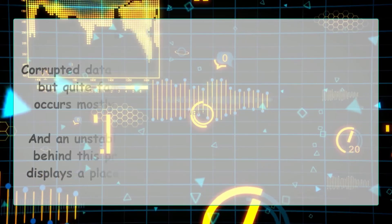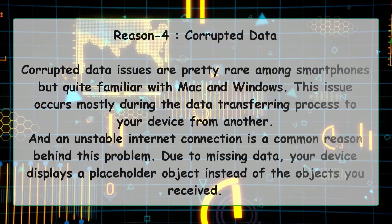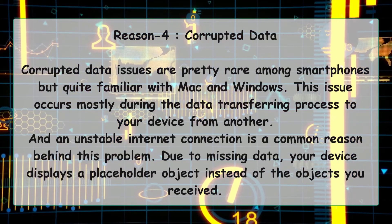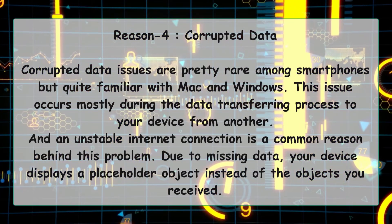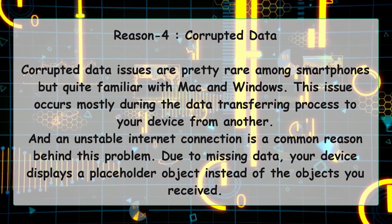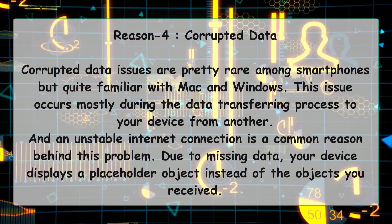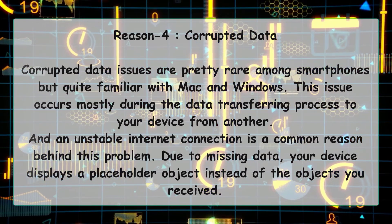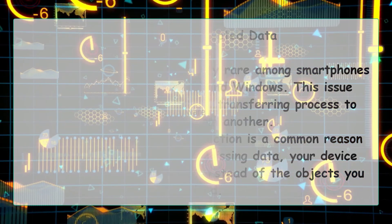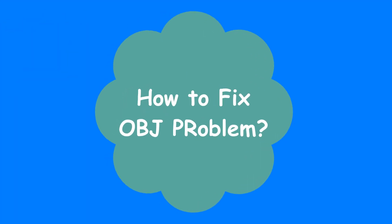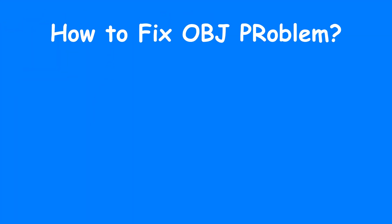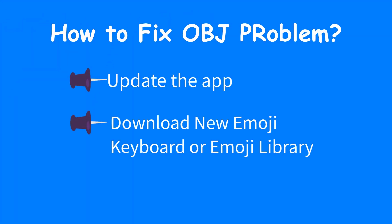The last reason is corrupted data. Corrupted data issues are pretty rare among smartphones but quite familiar with Mac and Windows. This issue occurs mostly during the data transferring process, and an unstable internet connection is a common reason behind it. To fix the OBJ problem, update the app, download a new emoji keyboard or emoji library, and update your browser — that should solve the problem.